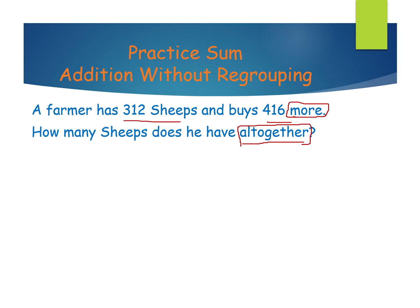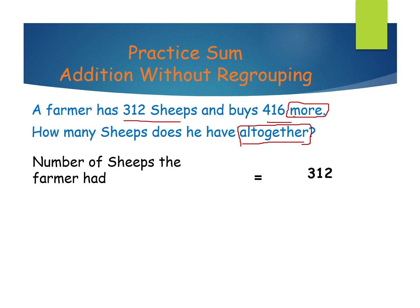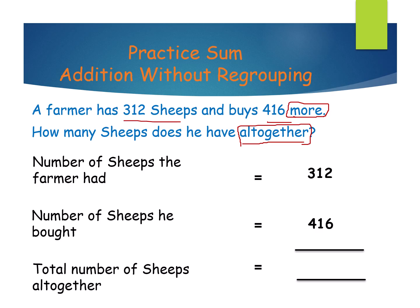I will tell the answer. First sentence: number of sheep the farmer had — how many? 312. Next, number of sheep he bought — how many? 416. What are they asking? How many sheep does he have altogether? Total number of sheep altogether.